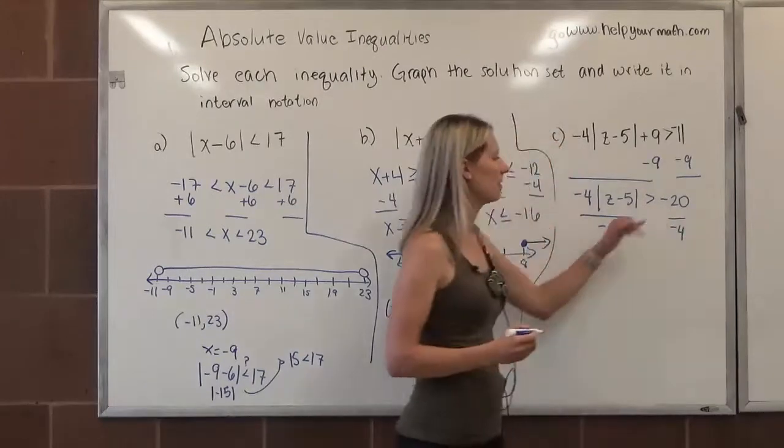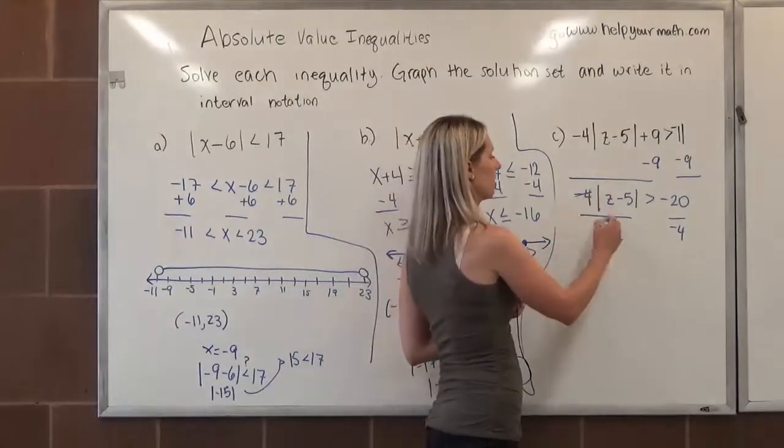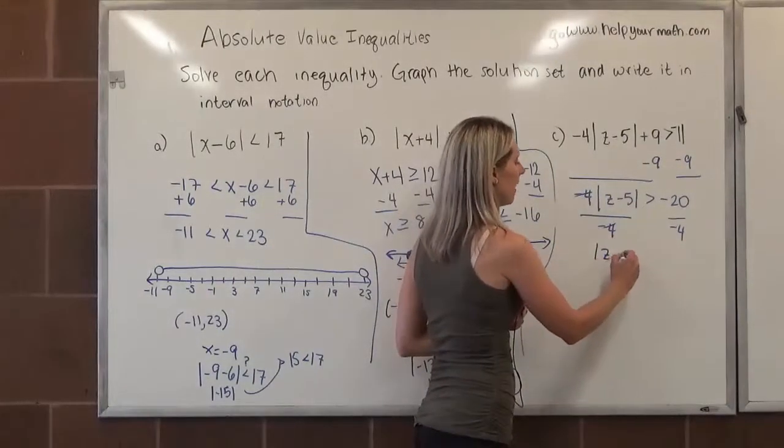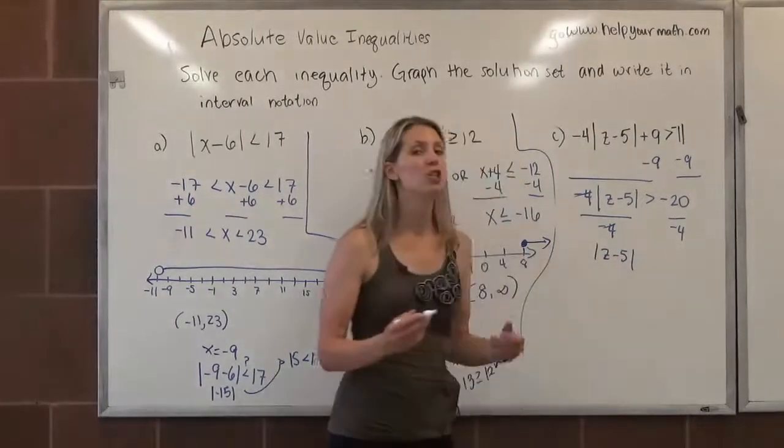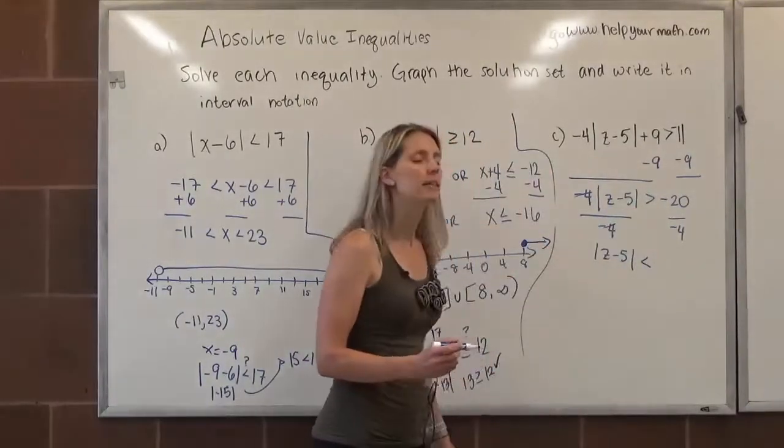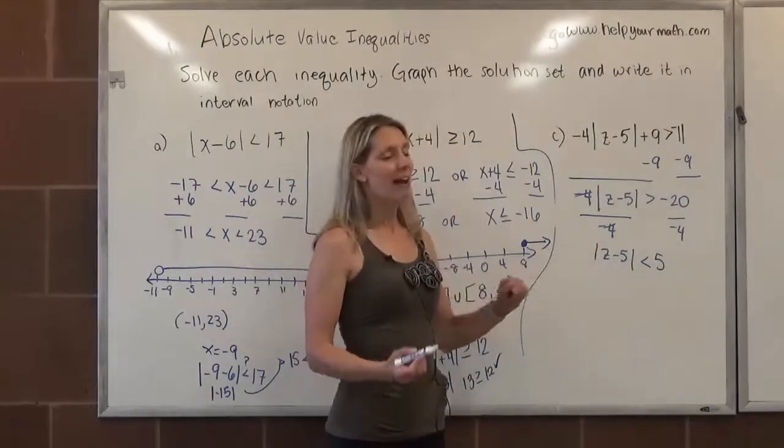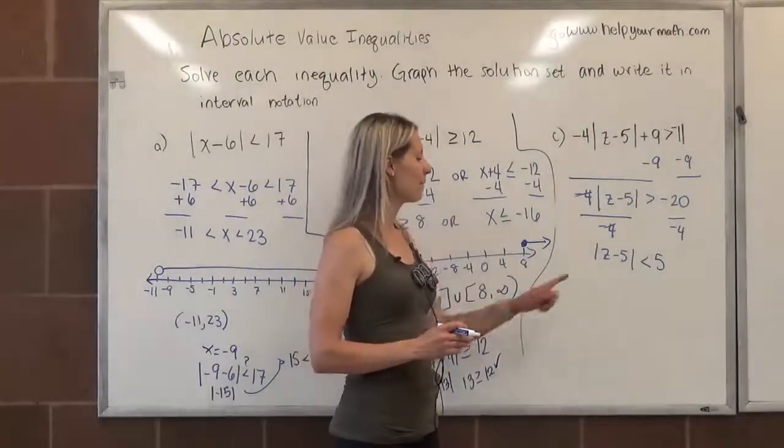What's another way that we can move something that's being multiplied to the other side? We can divide by that number. So if I divide both sides by negative 4, wait, we're talking about an inequality here. What does that do? That flips the inequality around. So the negative 4s cancel. We're left with z minus 5, but this greater than just became a less than. So it's now less than negative 20 divided by negative 4 is positive 5.